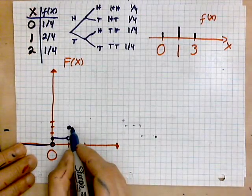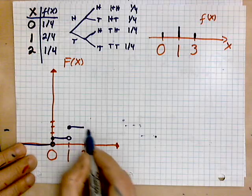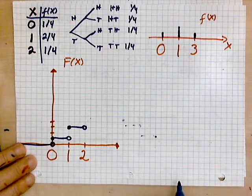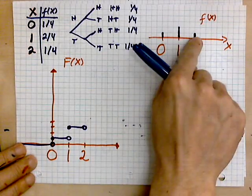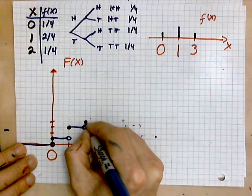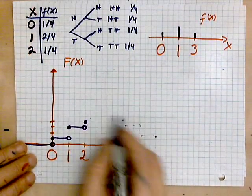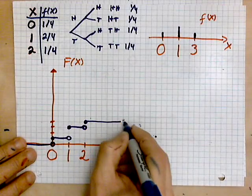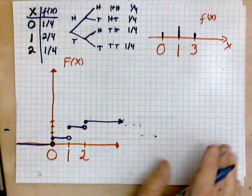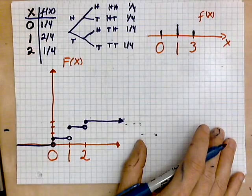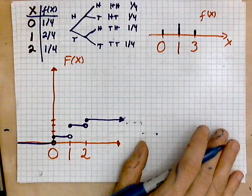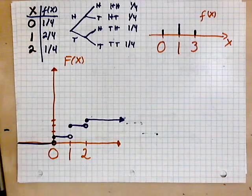And then you draw another one up to two, draw a hole at two, and then jump up by another one quarter and make that solid. And then you do that. It goes off forever to positive infinity. So this is the probability distribution function.